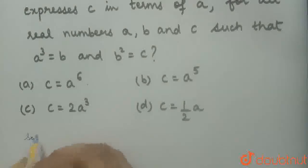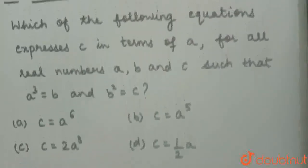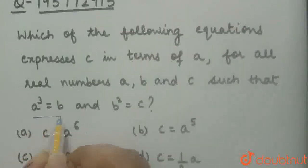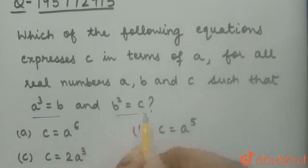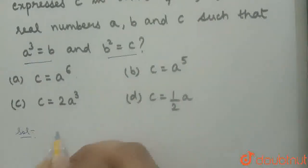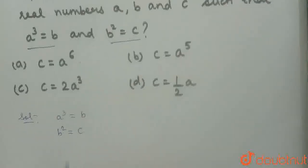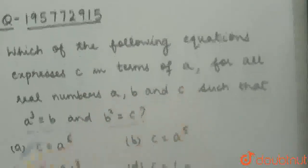Our solution will be: we are given these two expressions, A³ = B and B² = C. We have to express C in terms of A.